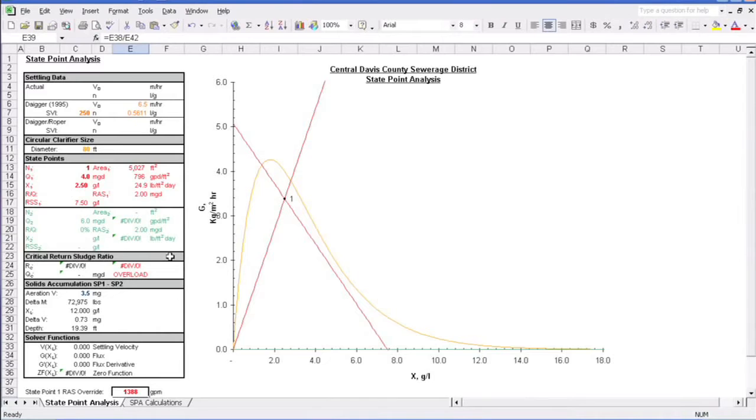But what would happen if flows continued to rise? Let's say to 5MGD. Well, in that case, we'd be failing in clarification as well as in thickening. Also, as mentioned, we've already maxed out our RAS pumps, so we can't pump any more out of the clarifier. In this scenario, there are two options.